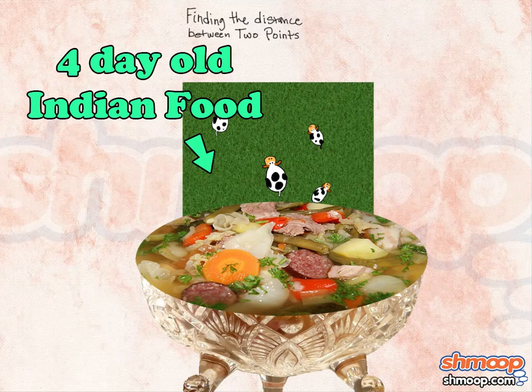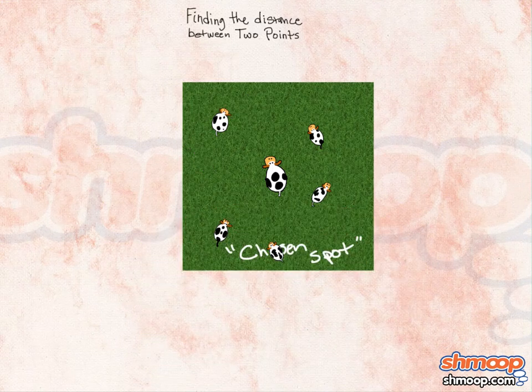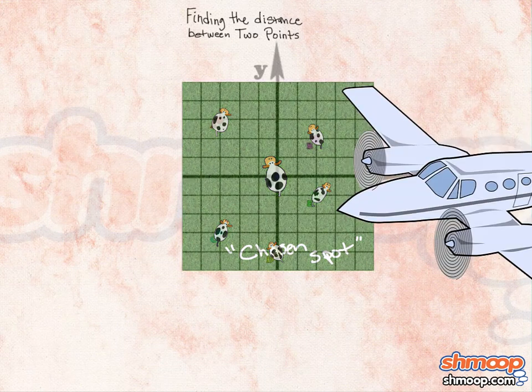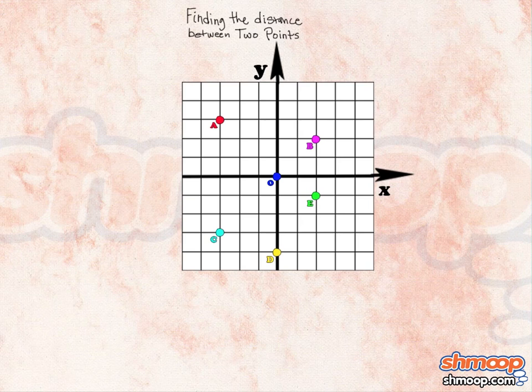Honestly, it's for their own good. But if we imagine the cow's situation on a coordinate plane, it might look something like this. Plus, it's much more appetizing to view it as a graph than to see the actual field. Trust us on this one.